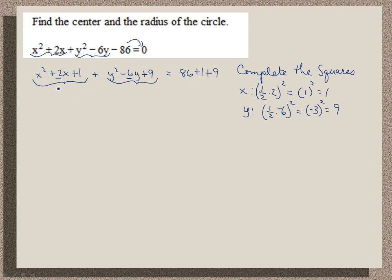Next we want to factor. X squared plus 2x plus 1 will factor into x plus 1 squared. Y squared minus 6y plus 9 factors into y minus 3 squared. On the right side you want to simplify. 1 plus 9 is 10, 10 plus 86 gives you 96.